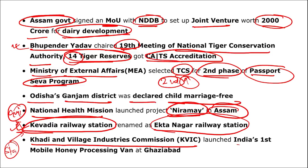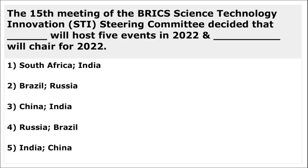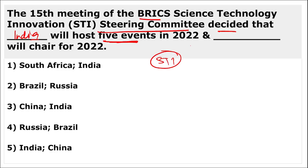KVIC (Khadi and Village Industries Commission) launched India's first mobile honey processing van at Ghaziabad. The 15th meeting of the BRICS Science and Technology Innovations Steering Committee (STIC) decided that India will host five events in 2022 and China will chair BRICS 2022.